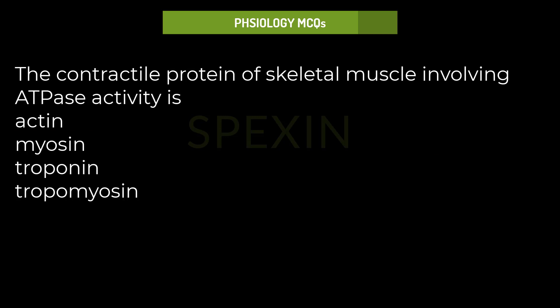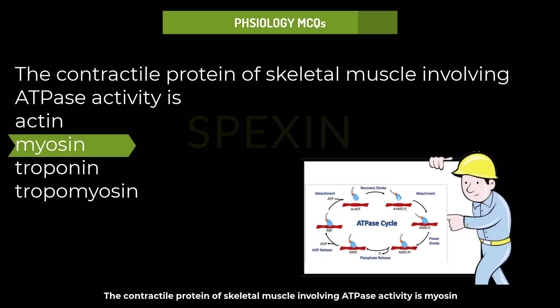The contractile protein of skeletal muscle involving ATPase activity is: actin, myosin, troponin, or tropomyosin? The contractile protein of skeletal muscle involving ATPase activity is myosin, which uses ATP to generate the force that helps in muscle contraction.